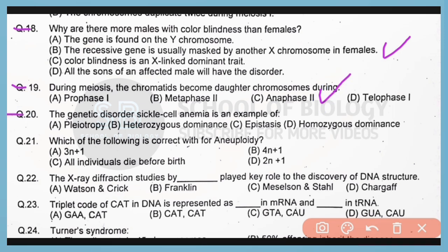Question 20. The genetic disorder sickle cell anemia is an example of pleiotropy. Correct answer is option A, because sickle cell anemia has multiple phenotypic effects.